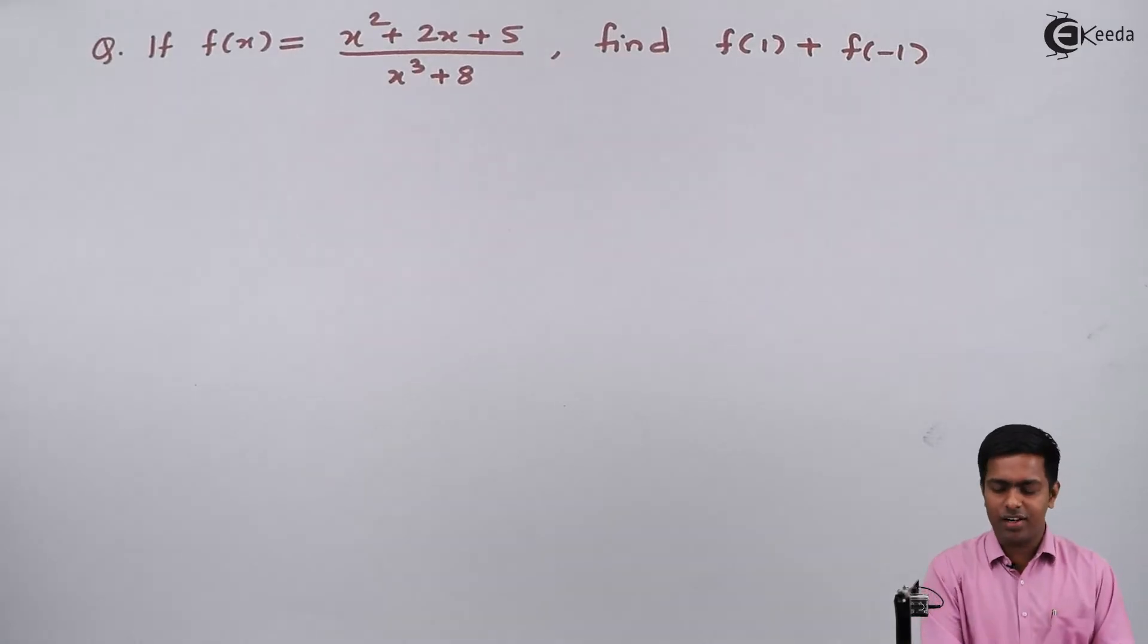Hi friends, so here f(x) is given as (x² + 2x + 5)/(x³ + 8), and we have to find f(1) + f(-1).